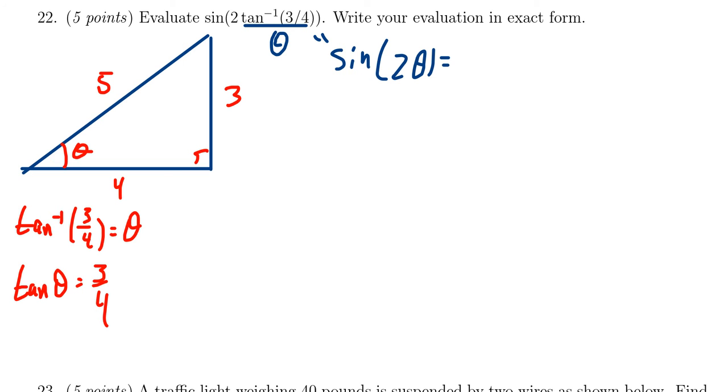Well, we can apply the double angle identity to sine here and get that sine of two theta is the same thing as two times sine of theta times cosine of theta. So using the triangle, sine theta is going to be opposite over hypotenuse, that's the same thing as three-fifths, and cosine is adjacent over hypotenuse, that's going to be four-fifths.